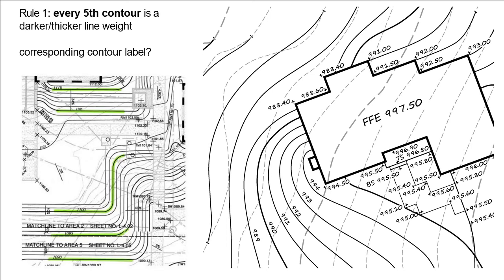Rule number one, every fifth contour must be darker, thicker line weight than the other contours. This fifth contour is often referred to as an index contour, and it is done to make the drawing easier to read. So again, every fifth contour, whether it is an existing contour or a proposed contour, must be darker, thicker line weight.